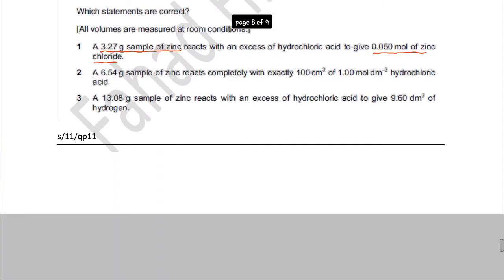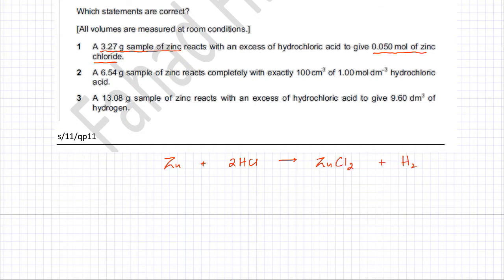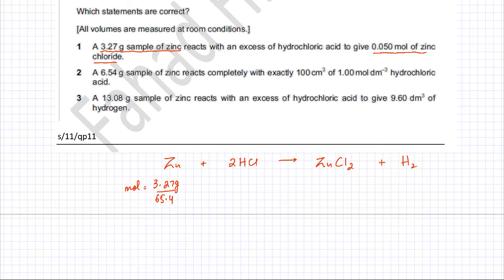We're going to construct a balanced equation. The equation is already there: Zn + 2HCl → ZnCl₂ + H₂. We're given 3.27 grams of zinc, and the first thing is to find the moles of zinc. Moles of zinc equals mass divided by relative atomic mass of zinc, which is 65.4. That gives us 3.27 divided by 65.4, which equals 0.05 moles.